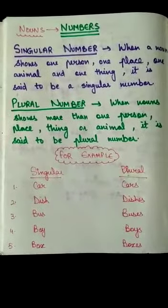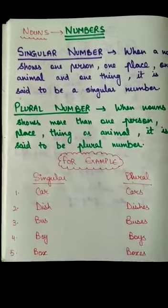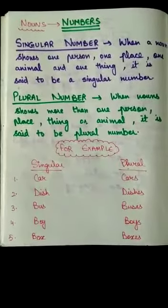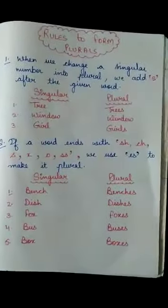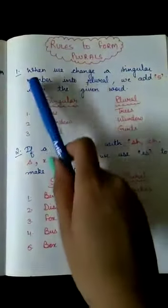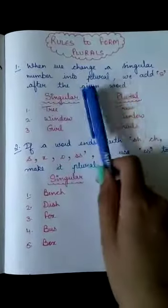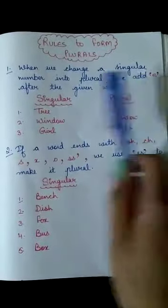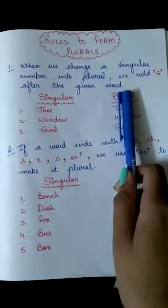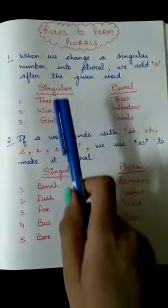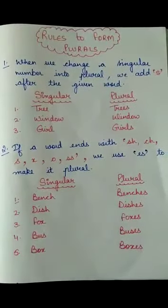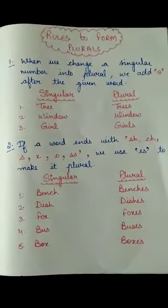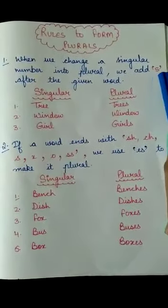Now, how will you be able to know where to use S and where to use ES? So we are having two simple rules for that. The first rule is, when we change a singular number into plural, we just simply add S after the given word. Most of the times you have done this, like boy becomes boys.